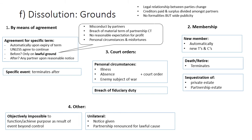We have seen that partnerships can dissolve either by means of an agreement when there was a specific term or event agreed upon, on the grounds of new or changed membership, upon the death or retirement of a member, or the sequestration of a private or partnership estate. Partnerships can also dissolve upon court orders, either because of personal circumstances or because of the breach of a fiduciary duty, or if it has become objectively impossible to achieve the purpose for which the partnership was established, or if a partner unilaterally wants to terminate the agreement by giving notice of such intention.